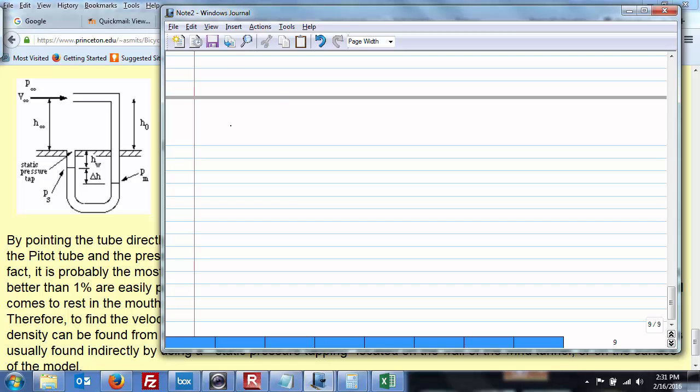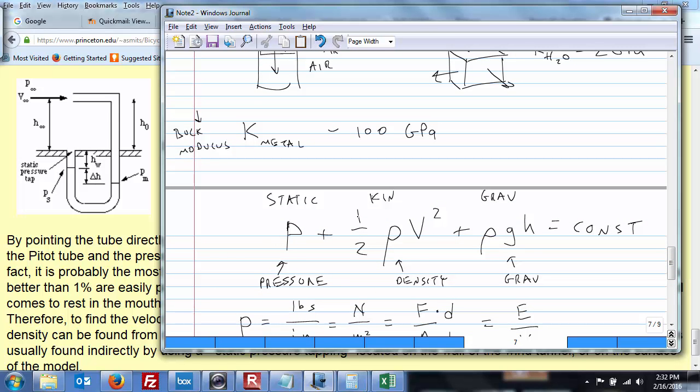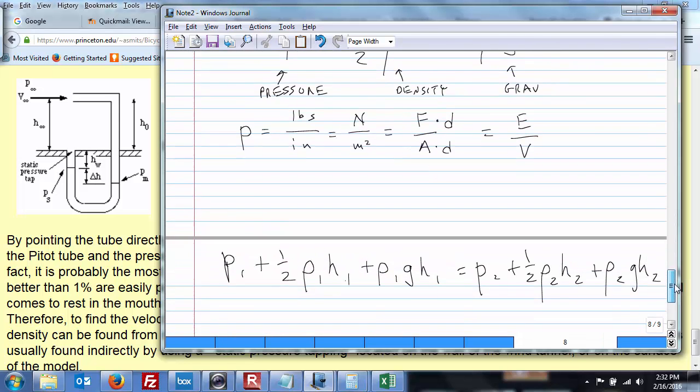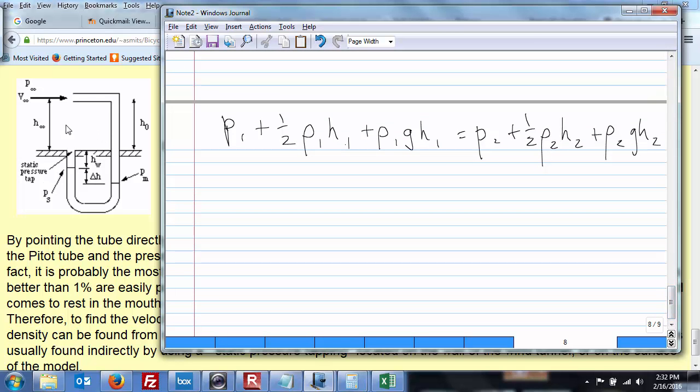So, again, another way to write Bernoulli's equation is like this. P1 plus 1 half rho V1 squared plus rho 1 G H1 equals P2 plus 1 half rho 2 V2 squared plus rho 2 G H2. It's just another way of writing that the energy is constant. So, we wrote it before. The pressure plus 1 half the density times the velocity squared plus the density times gravity times the height is some constant. Well, let's take a look in this particular example.